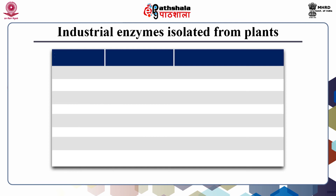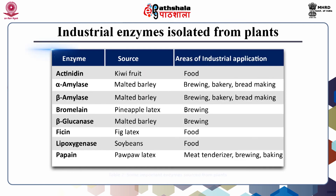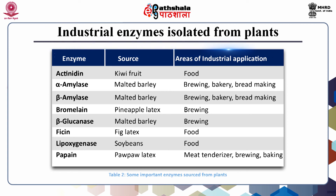Some industrially relevant enzymes sourced from plants are shown in Table 2. These include amylases, bromelain, glucanase, phycin, lipoxygenase, and papain. Malted barley acts as a source of alpha and beta amylases, used in bread and dough making. Papain is obtained from the green unripe papaya fruit and is used as a meat tenderizer and also in protein processing, brewing, and baking.